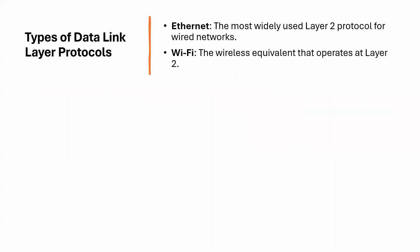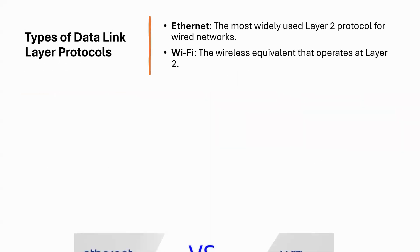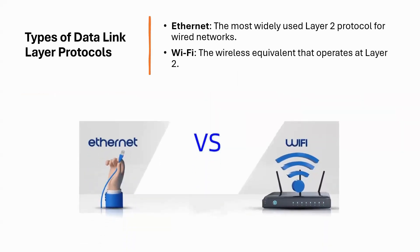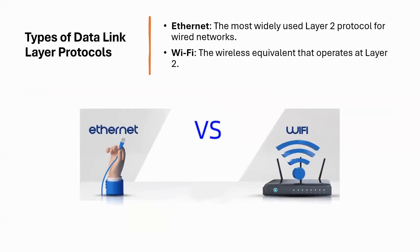Let's briefly cover some Layer 2 protocols. The most common one you'll come across is Ethernet, which defines how data should be framed and transmitted over wired networks. Another example is Wi-Fi, which is the wireless equivalent.